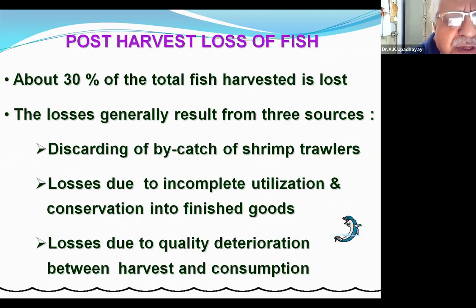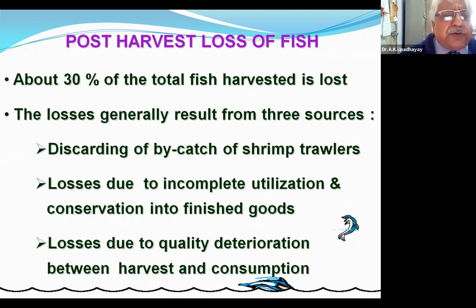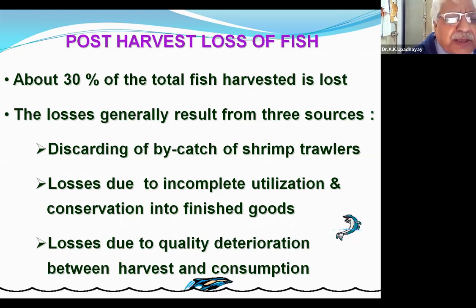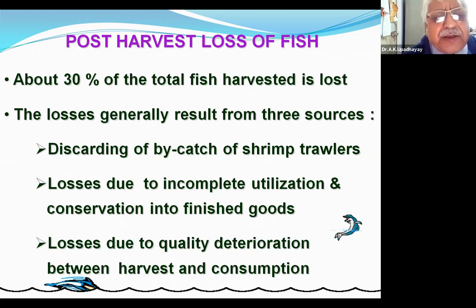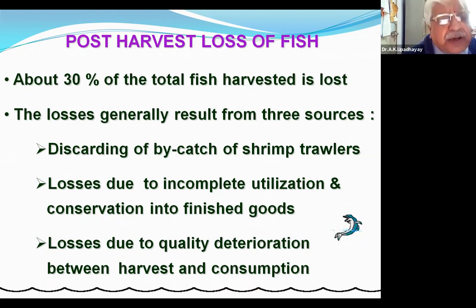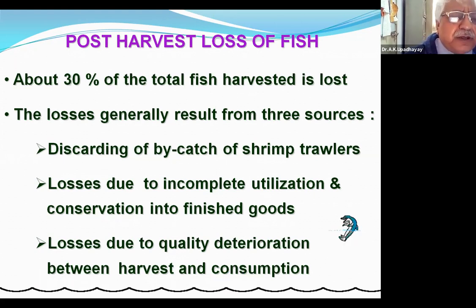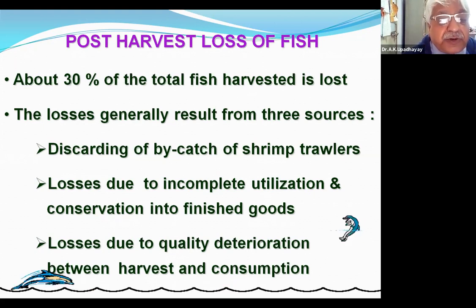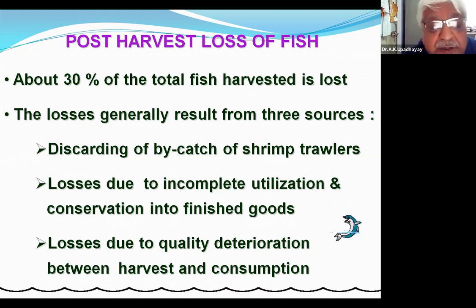What happened to the Andhra people? They sowed tomato thinking it would make them richer, but when the actual crop came, they had to spend more wages on plucking tomato from the plant rather than earning profit. This is the failure of planning. Losses generally result from discarding bycatch from shrimp trawling, incomplete utilization, losses in conversion to finished goods, and losses due to quality deterioration between harvest and consumption.